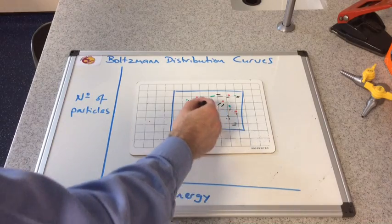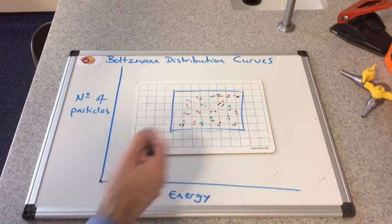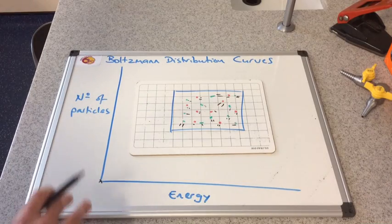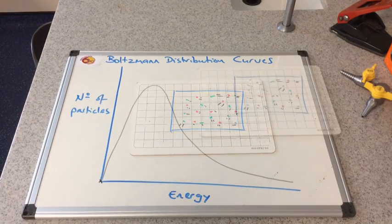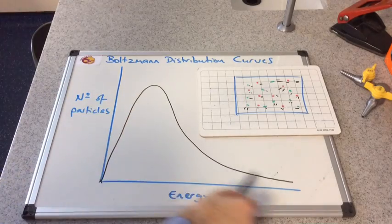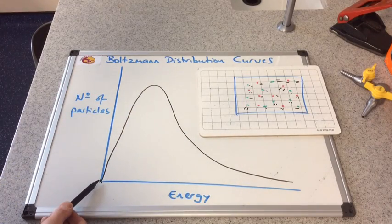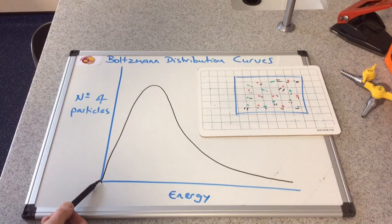So the bulk of the particles, the majority of the particles, have got some energy in between. So I'll draw a distribution curve now and I'll come back to that.